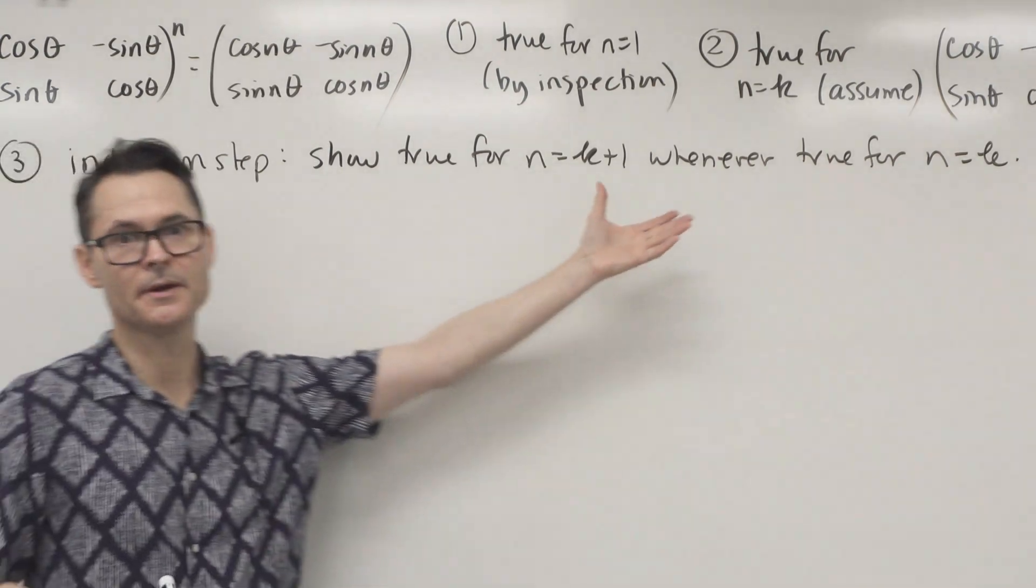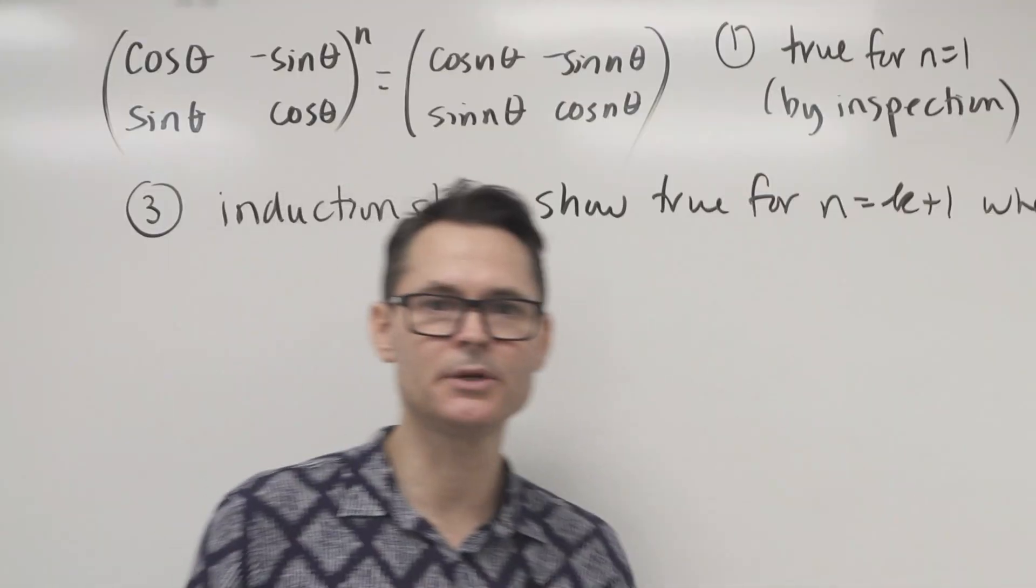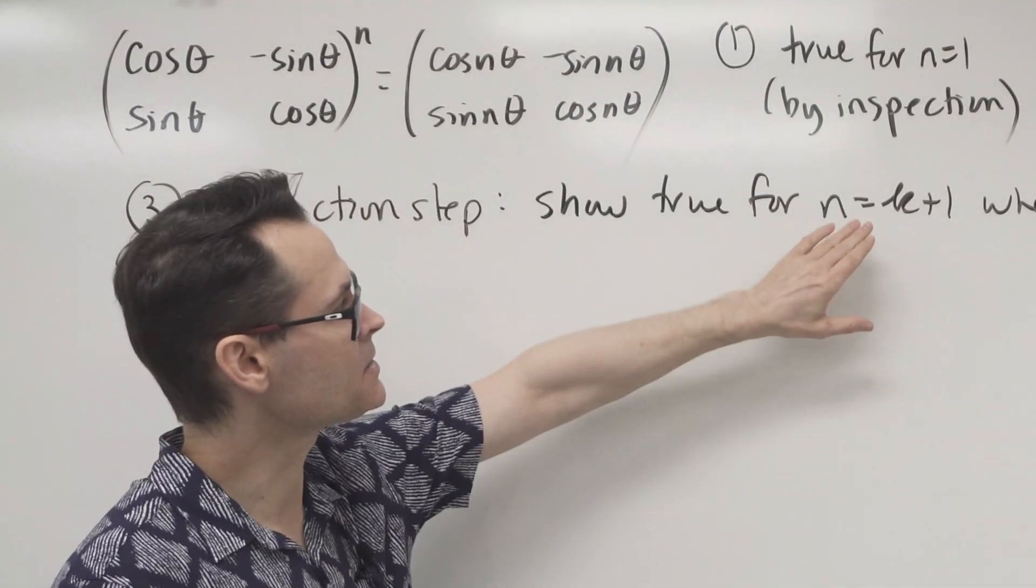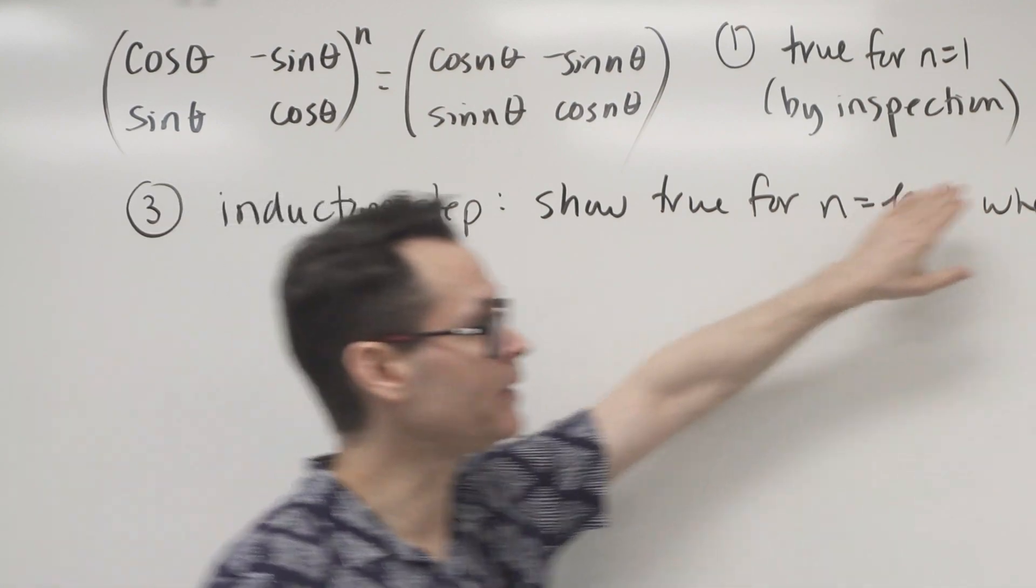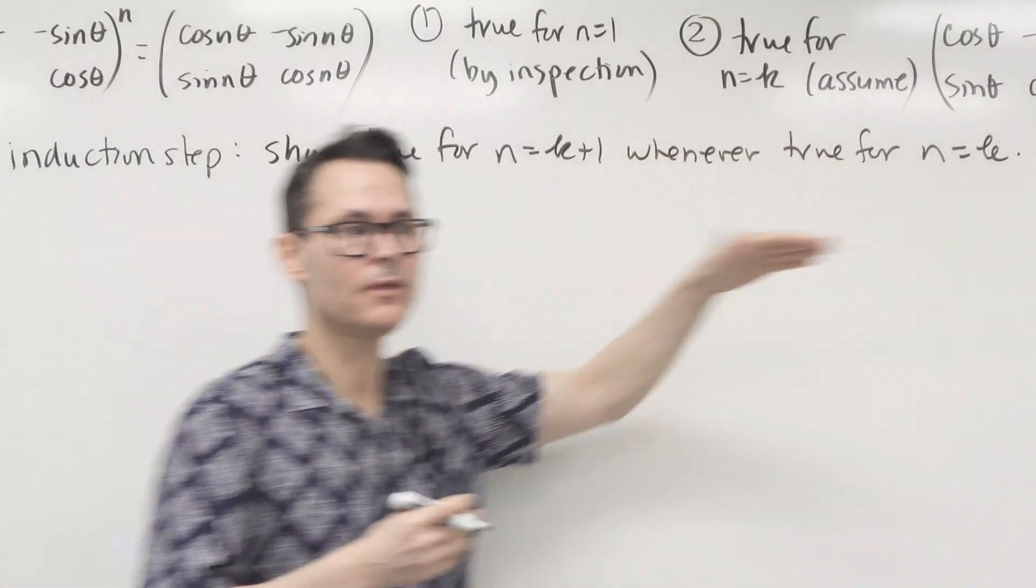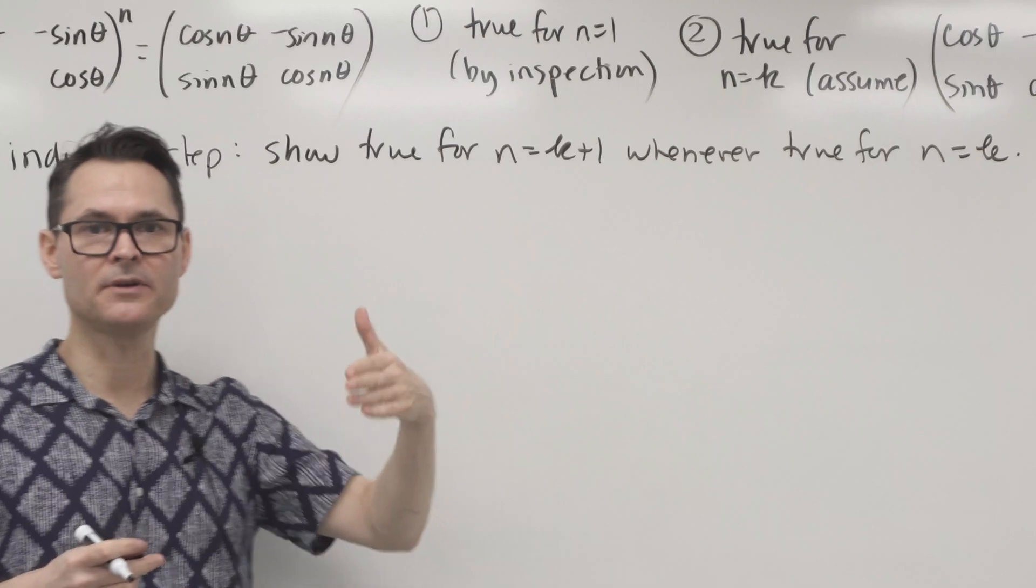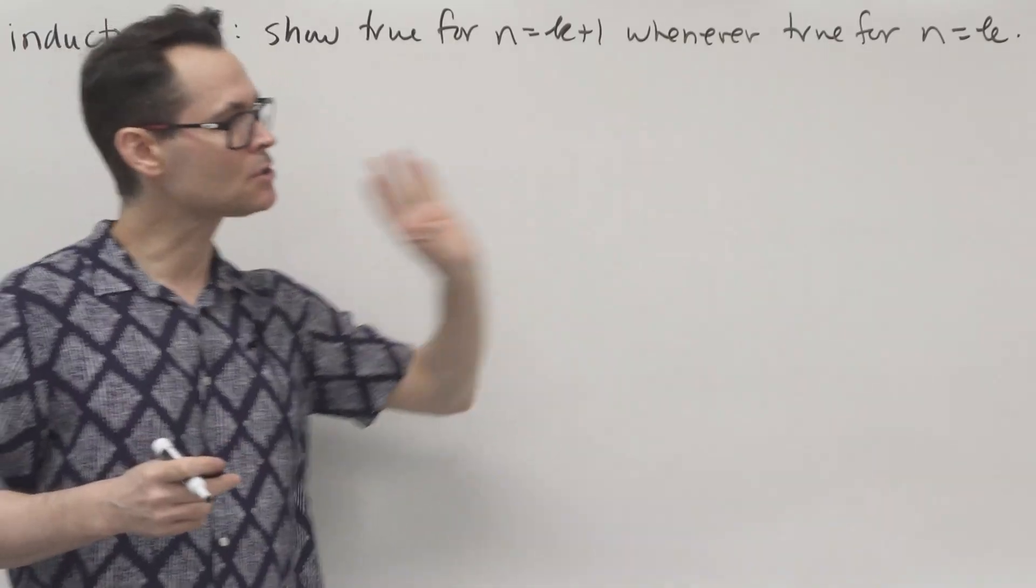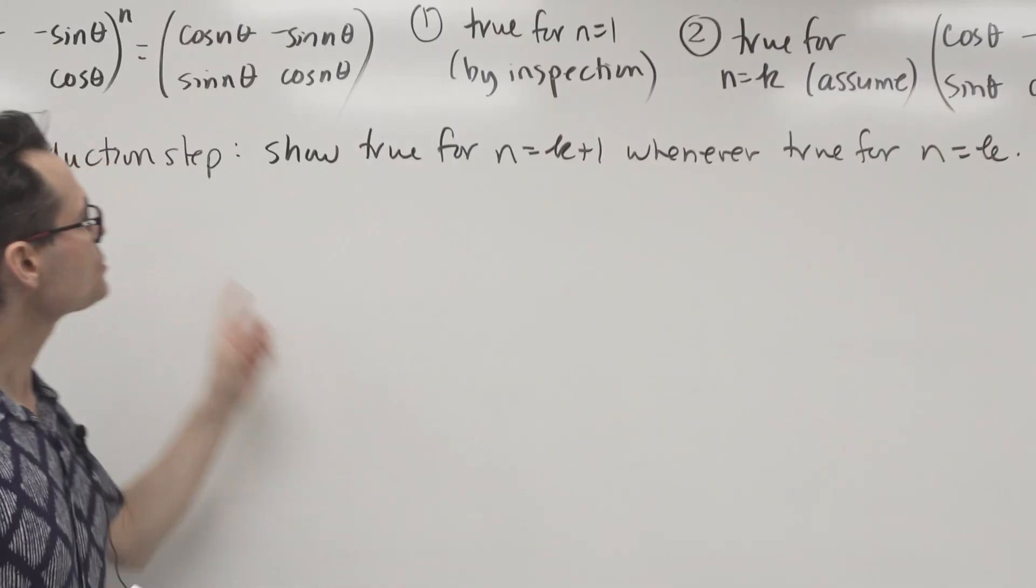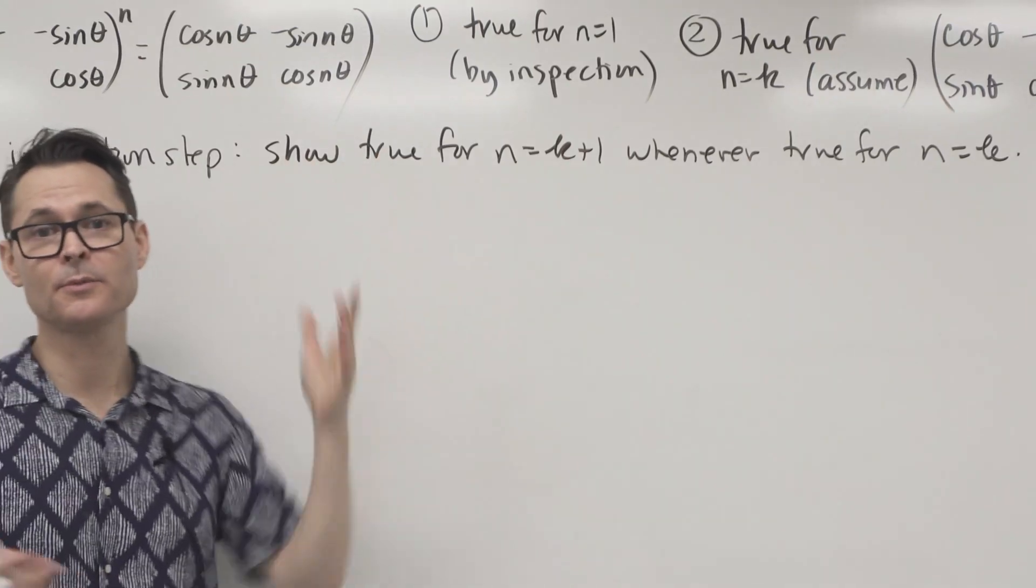Don't miss the power of this. This is like the domino effect. It's saying that if we can show that it's true for 7 whenever it's true for 6, well then that goes 8 when it's 7 and 9 when it's 8. And it just goes right to the end of the numbers. So this is the power of the proof by induction.